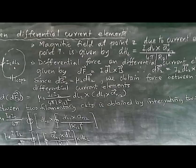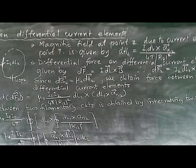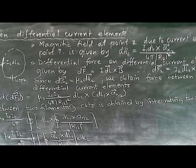The magnetic field at point z due to the current element at point one is given by dH2, which equals i1·dl1 cross a_r12, divided by 4π into the magnitude of r12 squared. Here a_r12 represents the unit vector of that direction. This is similar to Coulomb's law derivation where the denominator has the square of the magnitude r12.